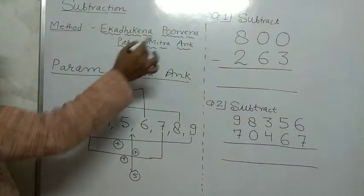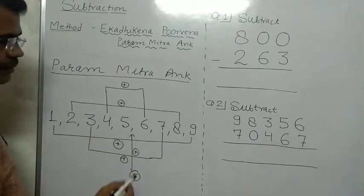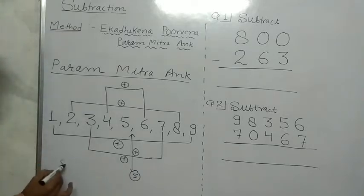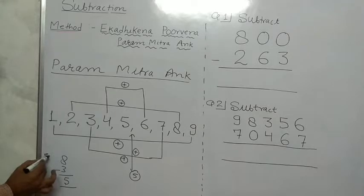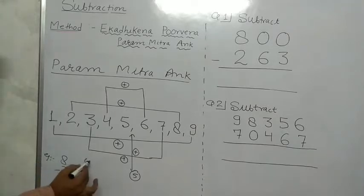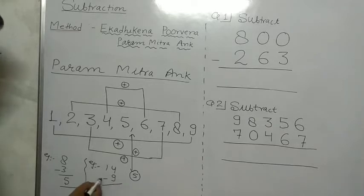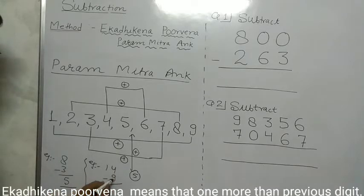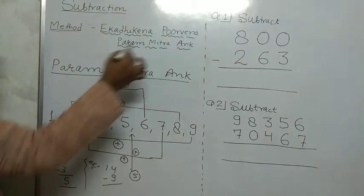In the Ekatecane Purvend Pramikkar Ankh method, where possible we subtract directly. For example, 8 minus 3 — we directly write 5. But if given 14 minus 9, here 9 cannot be subtracted from 4, so we use the Ekatecane Purvend Pramikkar Ankh method.